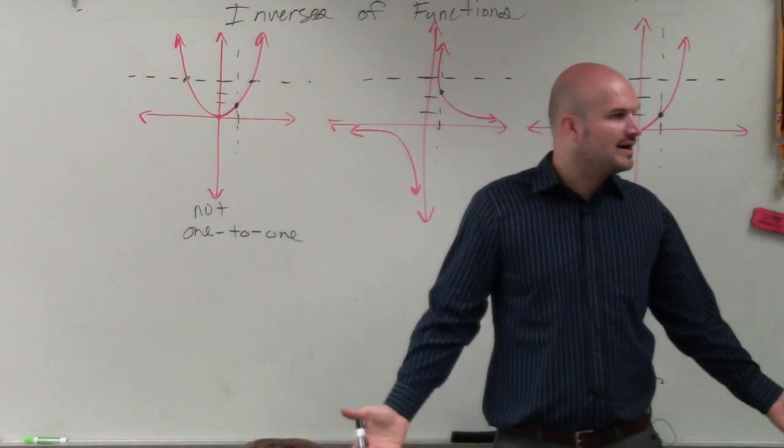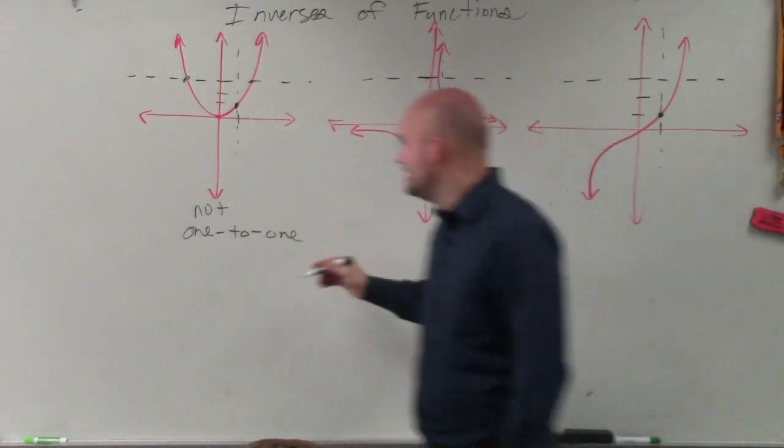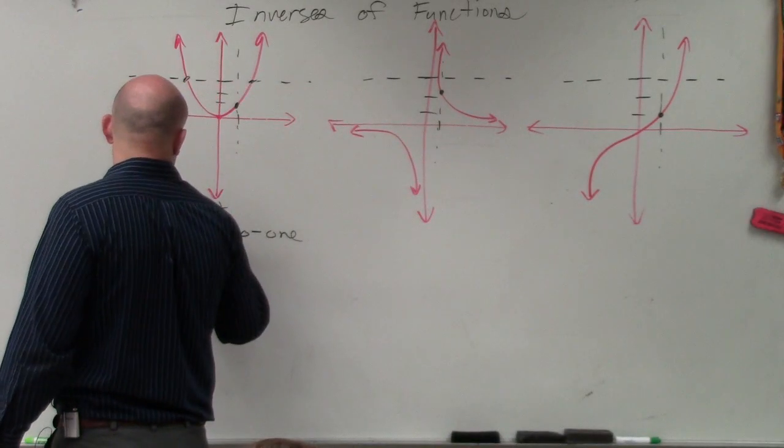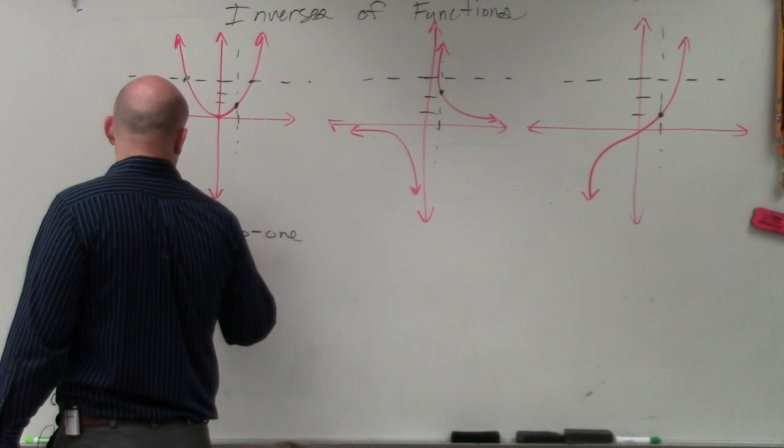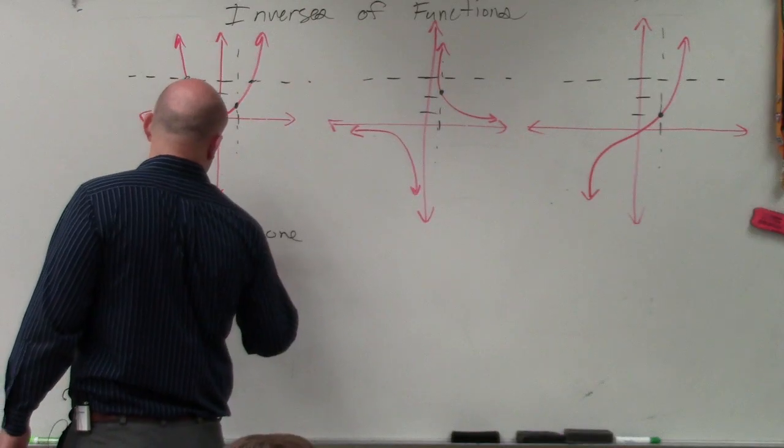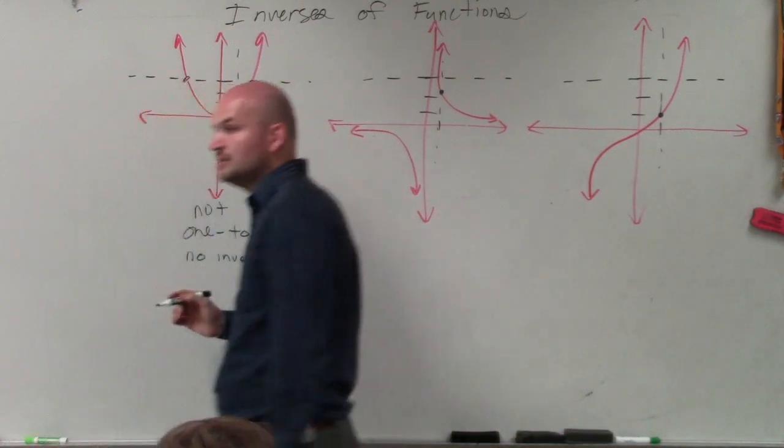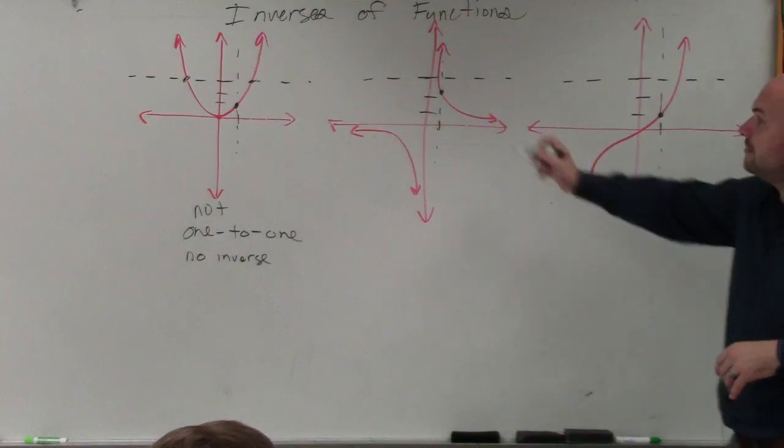So what does that matter? Why would we care about if that's not going to have inverse? It's not going to have, if it's not one-to-one, then there's no inverse of the function. And I'll explain that in a second.